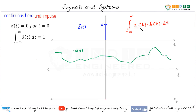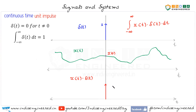Here we have the product x(t) times δ(t). Let's see how x(t)·δ(t) will look. We have previously done this. For t not equal to 0, x(t)·δ(t) is 0. But when t equals 0, we will get a scaled impulse. Let's say this is x(0) — so we will get a scaled impulse x(0)·δ(t).